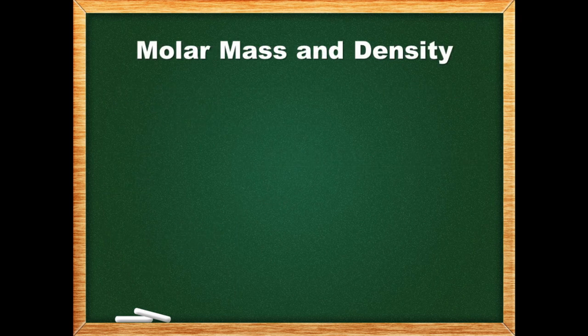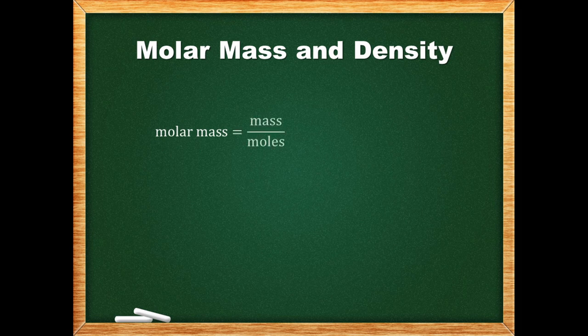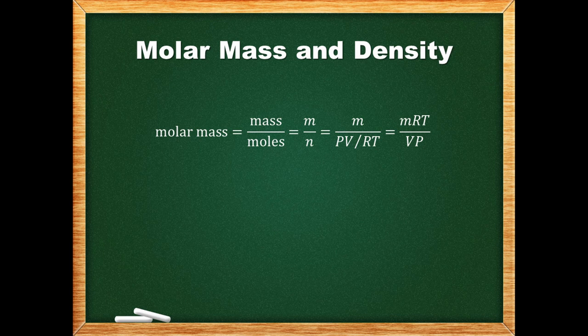There is another equation we can derive from the ideal gas law involving molar mass and density. Remember that molar mass is mass over the number of moles, but using the ideal gas law we can express the number of moles in terms of pressure, volume, the ideal gas constant, and temperature. Rearranging, we notice we have mass over volume, which we can express as density (lowercase d, or sometimes the Greek letter rho). This equation is nicknamed the 'kitty cat equation' which comes from 'meow' — starts with m and ends with w — and 'drt' (dirt), which is what kitty cats put on the P in their litter boxes. Just a convenient way to remember the equation.